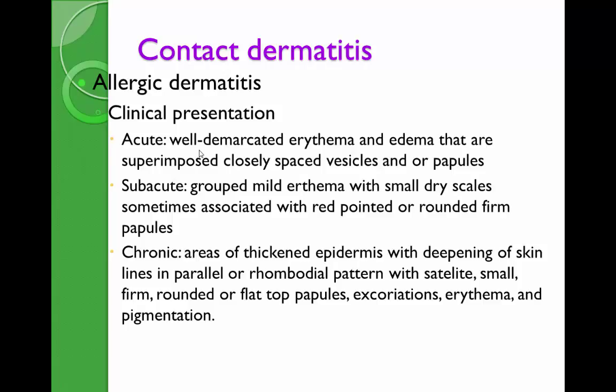The phases progress from acute to chronic. In the acute phase: well-demarcated erythema and edema due to vasodilation, capillary permeability, vesicles, and papules. In the subacute phase: mild erythema, papules, macules, dry skin, and scaling begins. In the chronic phase: deepening of skin, visible epidermal anatomy due to lichenification, small firm round papules or nodules, scarring, excoriations from scratching, and hypo- or hyperpigmentation depending on depth of damage.